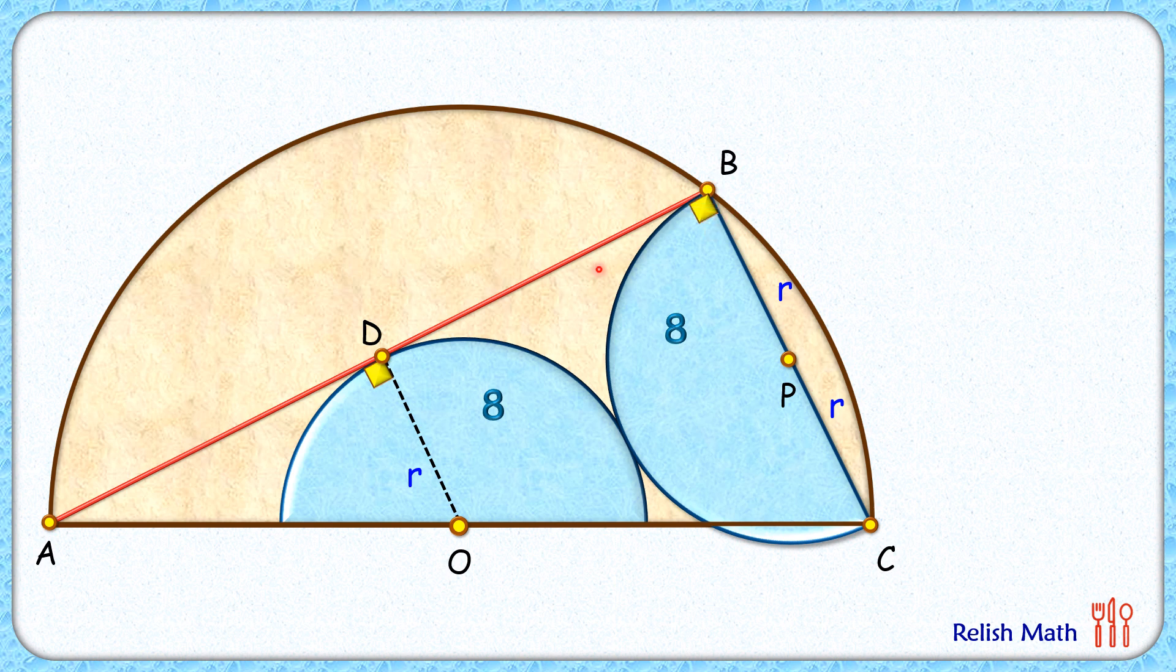As these two angles are corresponding angles, thus DO is parallel to BC. Here if we apply the converse midpoint theorem, that is DO is half of BC and DO is also parallel to BC.